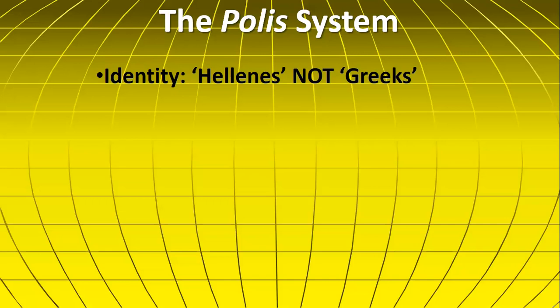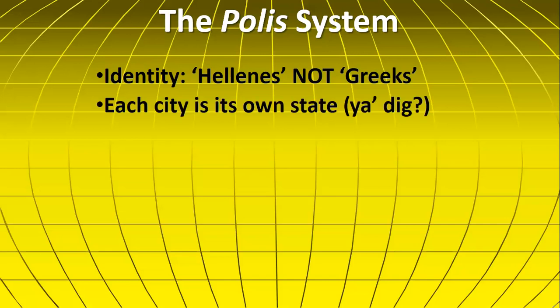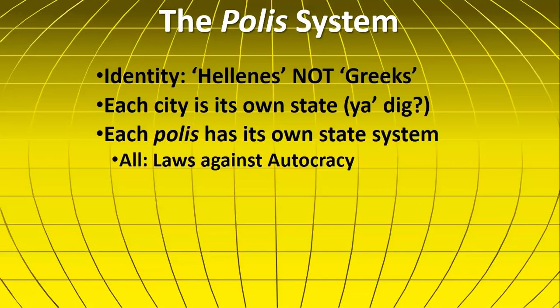People who worshipped the Greek gods and spoke the Greek language were called Hellenes. But if I lived in a city-state and you lived in a city-state, even though we were both Hellenes, we were considered foreigners to each other — that is the Polis system. Each of these city-states was free to set up their own system, though they all had in common a system of laws that made autocracy very difficult. No one should be above the law.